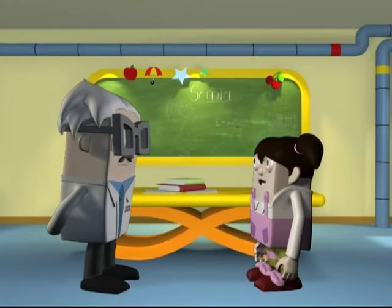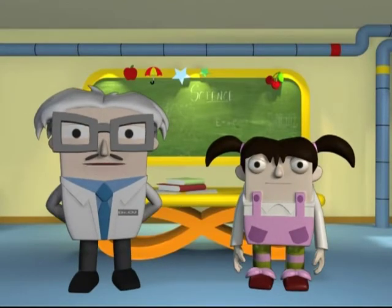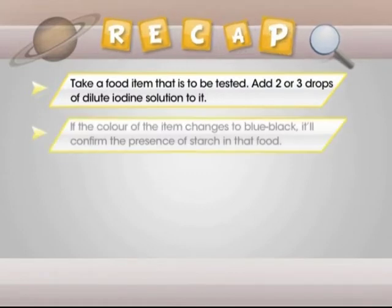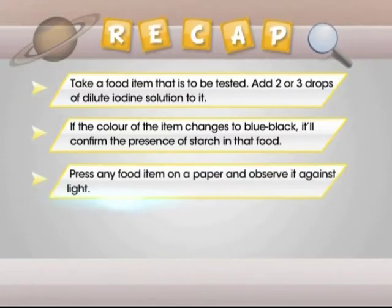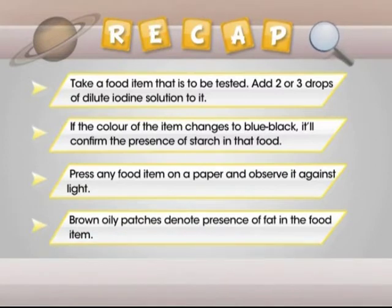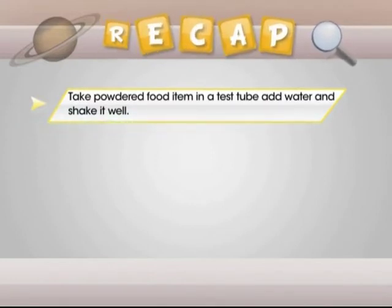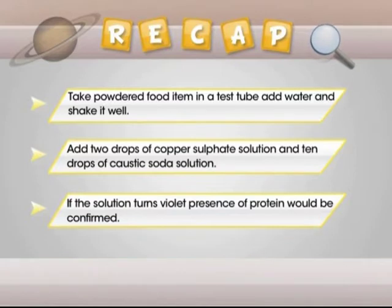I need to tell my mom about all these. I am sure she already knows, Cherry dear, but there is no harm in a quick recap. Let's summarise: add 2 or 3 drops of dilute iodine solution to a food item — if it changes to blue-black, starch is present. Press a food item on paper and observe it against light — brown oily patches denote the presence of fat. Take powdered food item in a test tube, add water and shake it, then add 2 drops of copper sulphate solution and 10 drops of caustic soda solution — if the solution turns violet, protein is confirmed.